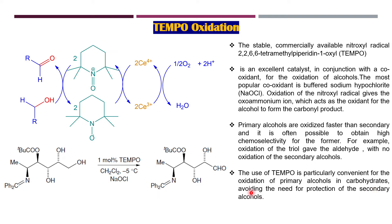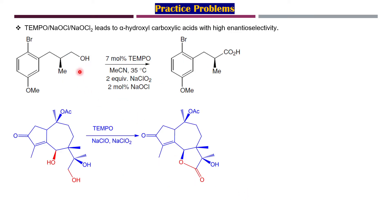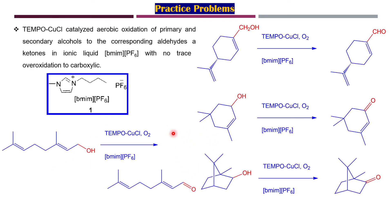TEMPO is particularly convenient for the oxidation of primary alcohols in carbohydrates, avoiding the need for protection of the secondary alcohols. When TEMPO is used in presence of sodium chloride and hypochlorite, it leads to the formation of alpha-hydroxy carboxylic acids with high enantioselectivity. The oxidation takes place and the acid formed combines with the hydroxyl group to give a particular lactone product.